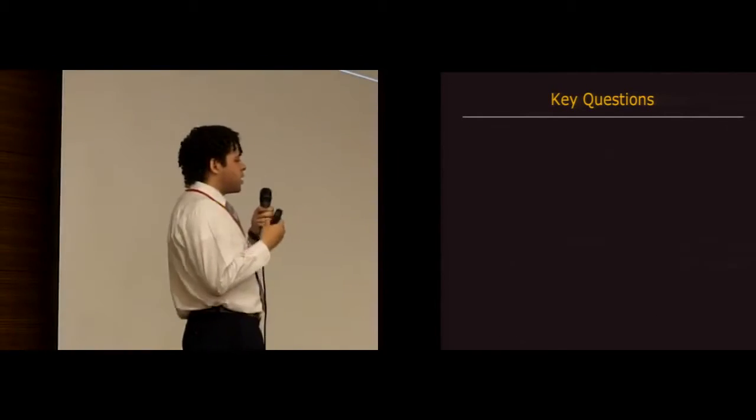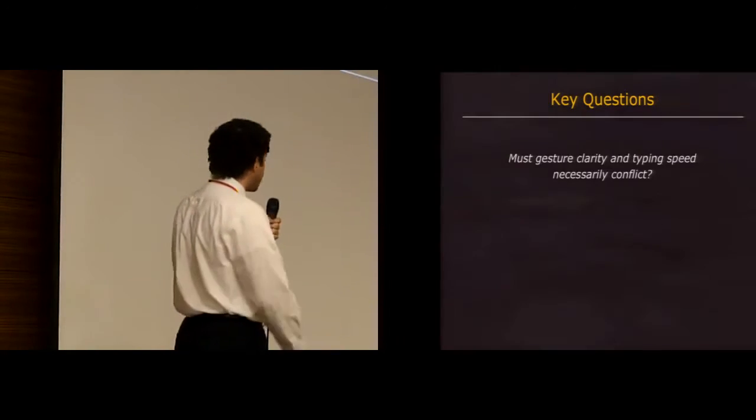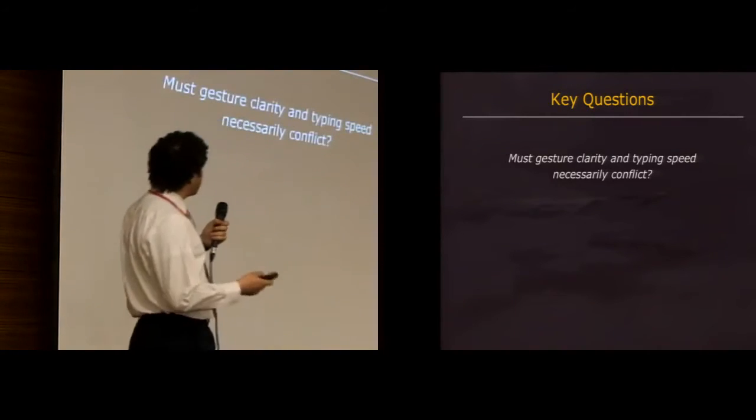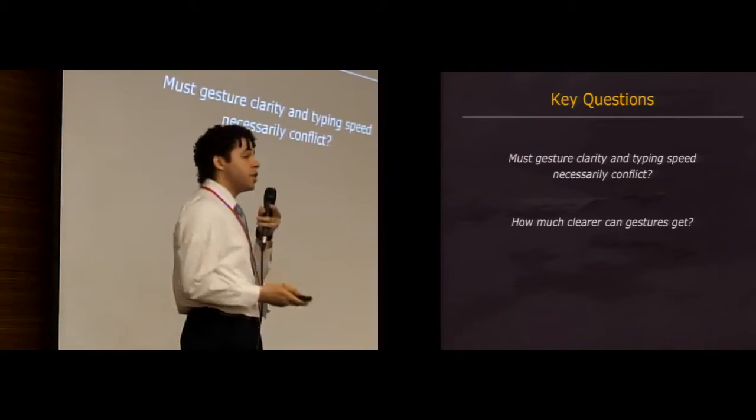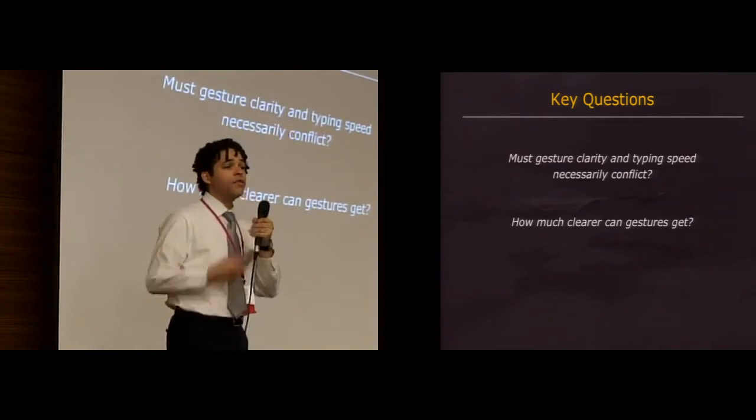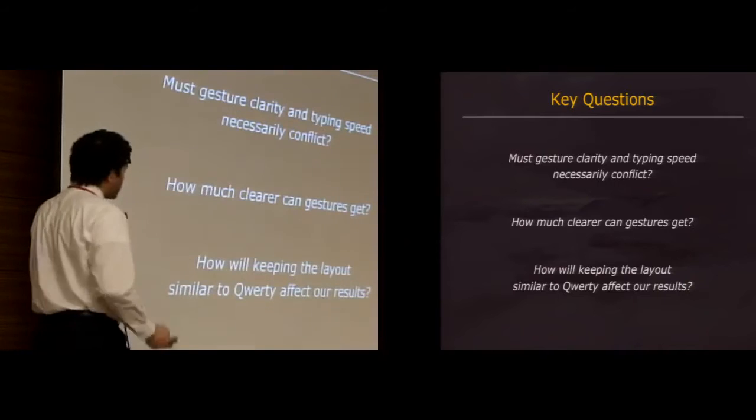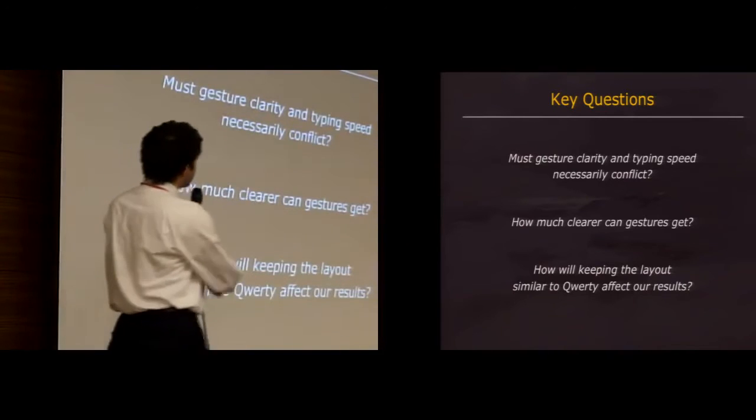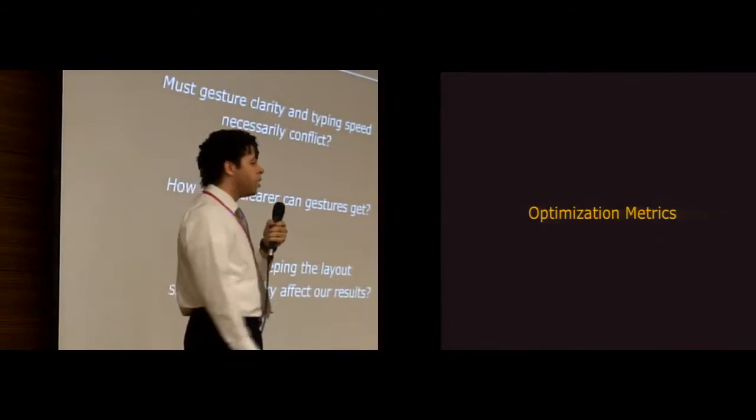So this dichotomy between speed and clarity raises a few key questions that we'd like to answer. First, must they necessarily conflict or is there a way to find some sort of harmony between the two? Next, how much clearer can gestures actually get? How far can we go when it comes to optimizing for clarity? And last, how will these answers change if we decide to keep the layout similar to QWERTY to foster learnability?